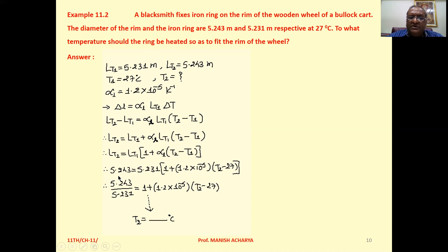So substitute the values now: 5.243, that is L_T2; 5.231, that is L_T1; 1.2 × 10⁻⁵, that's alpha L; T2 which we want to find; T1 that is 27 degrees Celsius. Now solve this particular equation and make T2 as a subject and you will get the answer.